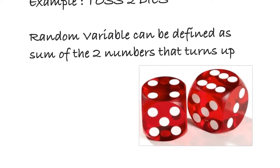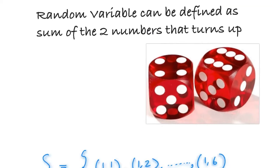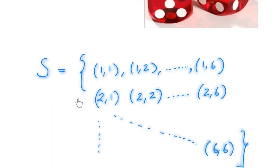Let's see an example. I have two dice as shown here. I'm defining my random variable as the sum of the two numbers that turn up for this particular experiment — tossing these two dice. For this experiment, this is my sample space: the set of all possible outcomes. Anything in this particular set can be an outcome, so this is my sample space S and these are my individual outcomes.